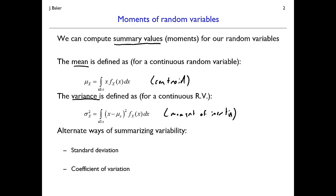There are also other ways to look at variability. We can compute the standard deviation of x, denoted sigma subscript x — similar to the sigma subscript x squared used for variance. This is simply the square root of the variance. That's useful because the variance has units of the random variable squared, whereas the standard deviation has directly the units of the random variable, making it easily interpretable as the scatter in units of the variable you're measuring.